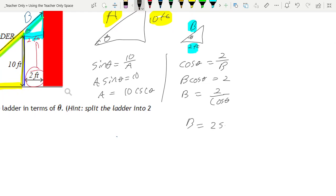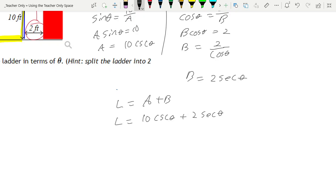So the length of my ladder being A plus B, I could substitute that in to make it 10 cosecant theta plus 2 secant theta. Okay, fantastic.